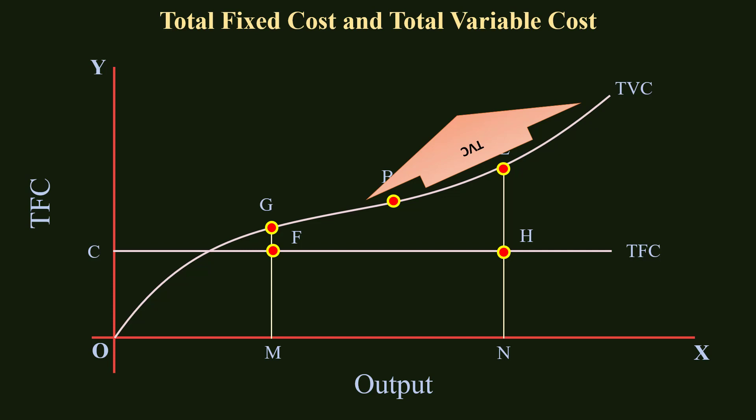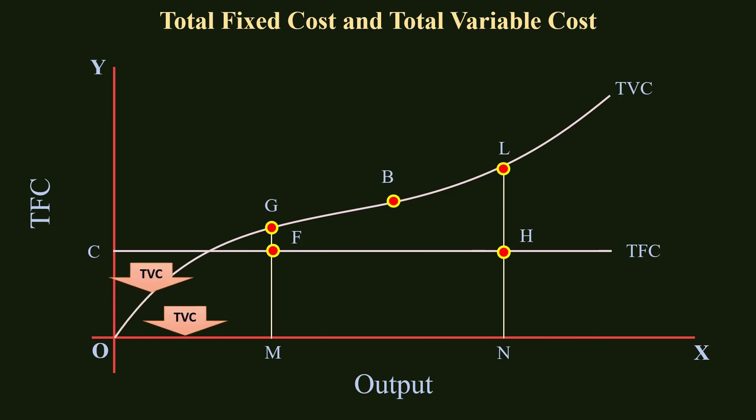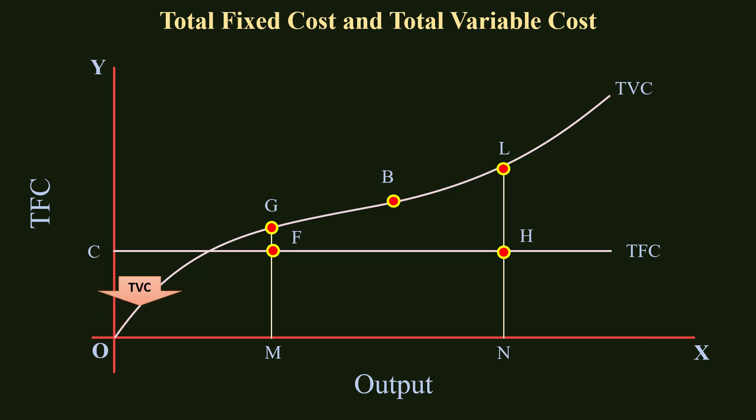In short, the Total Fixed Cost Curve is parallel to the X-axis because Total Fixed Cost is constant in the short run. The Total Variable Cost Curve slopes upwards because output can be increased only by increasing Total Variable Cost. It takes an inverted S-shape because of the Law of Variable Proportions. The answer ends here.